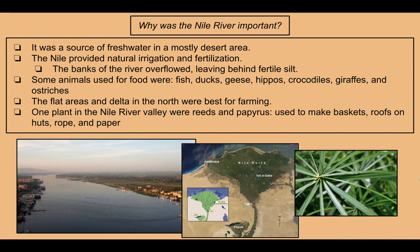Why was the Nile River important? It was a source of fresh water in a mostly desert area. It provided natural irrigation and fertilization — the banks of the river overflowed, leaving behind fertile silt, a substance good for growing crops. Animals used for food included fish, ducks, geese, hippos, crocodiles, giraffes, and ostriches. The flat areas in the Delta in the north were best for farming. Plants in the Nile River Valley included reeds and papyrus, which were used to make baskets, roofs on huts, rope, and paper.